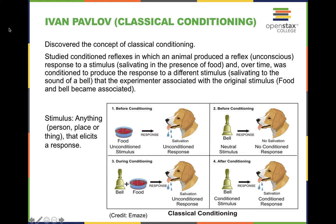All I really want you to take away from this slide is that a stimulus equals anything — person, place, or thing — that elicits a response. Classical conditioning, thanks to Ivan Pavlov, is the understanding that we learn from association to anticipate events.